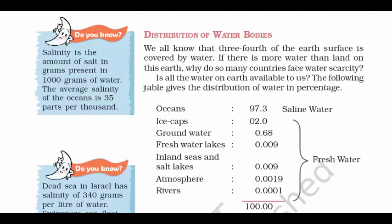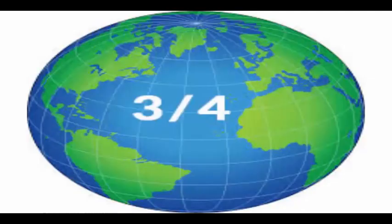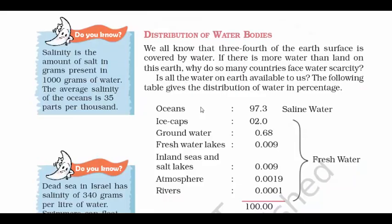Coming to the next topic: distribution of water bodies. It is a fact that three-fourths of the earth's surface is covered by water. And it may seem funny that if there is so much more water than land, then why do so many countries face water scarcity? That is because the amount of water which is drinkable — fresh water — is very less.